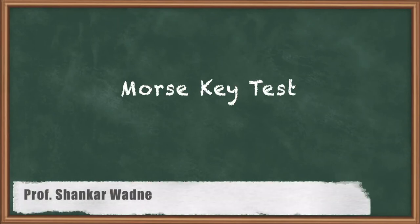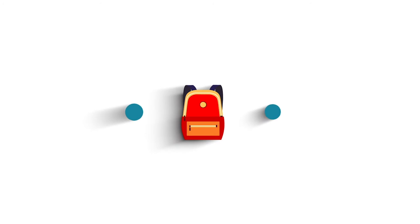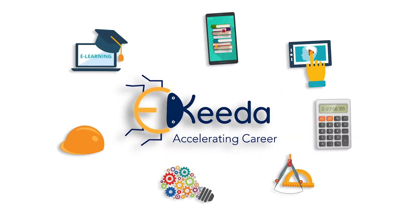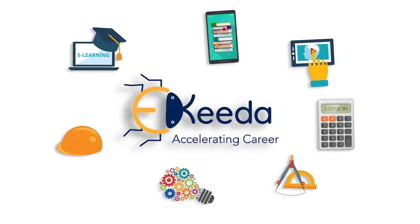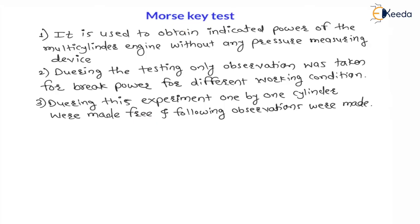Hello my dear students. In this lecture we are going to see the Morse Key Test. This Morse Key Test is used to find indicated power. Various points are written here and we will understand these points diagrammatically. The Morse Key Test is used to obtain indicated power of the multi-cylinder engine only, without any pressure measuring device. A pressure measuring device is not required to find the power.